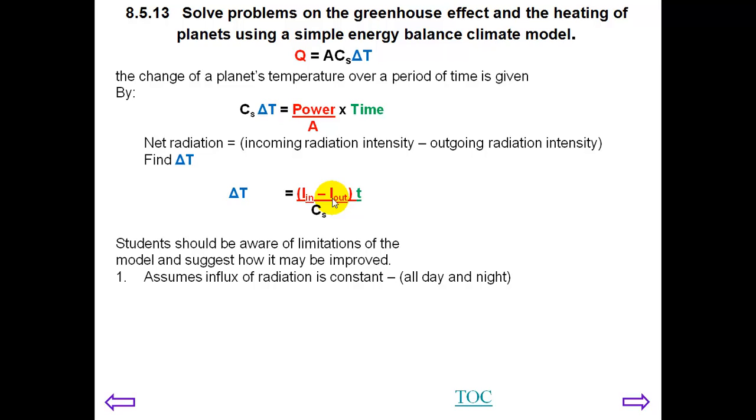This calculation of delta T assumes that the intensity of the influx, the radiation that is coming in, is constant day and night, which of course it isn't.